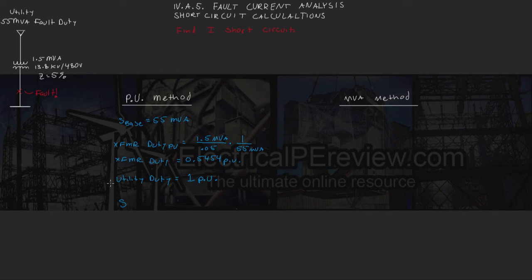Anytime we're dealing with short-circuit calculations, our complex power values are always going to be the sum of the reciprocals in series, and then they're going to just add normally in parallel. Since we've got our utility up here and our transformer, these are in series, we're actually going to add the inverse of the reciprocal sums.